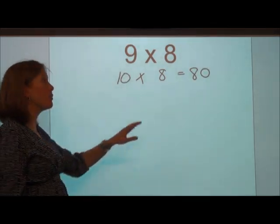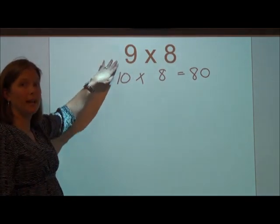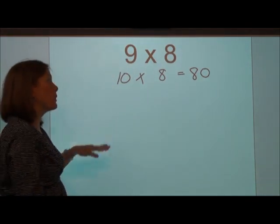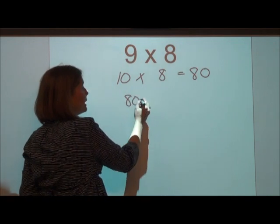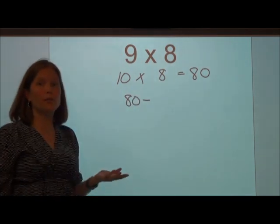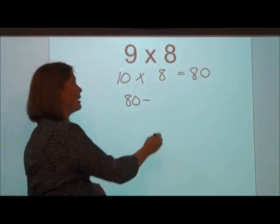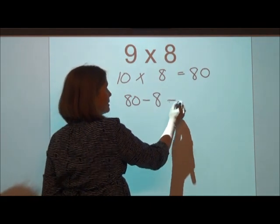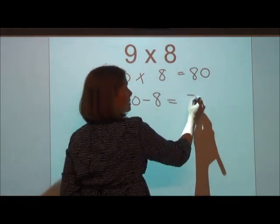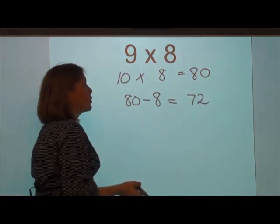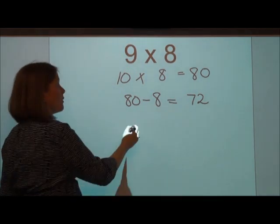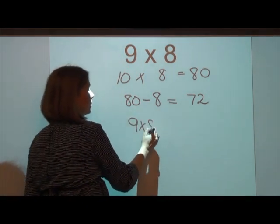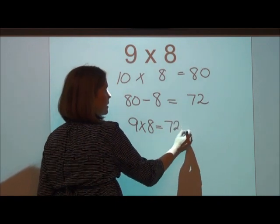But we have to remember that the original problem was 9 groups of 8, not 10 groups of 8. So we have to take this 80 and we need to take away that extra group of 8 that we added to make that 10. So 80 minus 8 is going to give us 72. When we're looking for the product of 9 times 8, it's going to be 72.